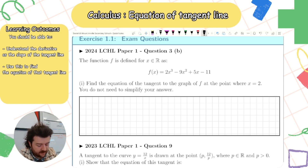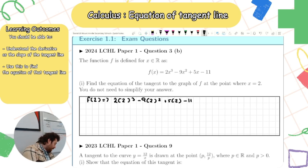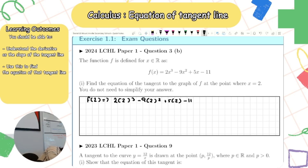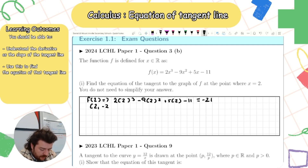Substituting x = 2 into f(x): 2 times 2³ minus 9 times 2² plus 5 times 2 minus 11, which gives −21. So my point is (2, −21).